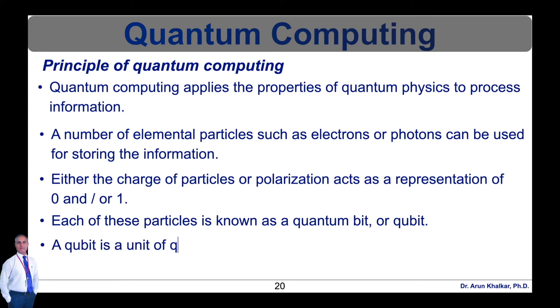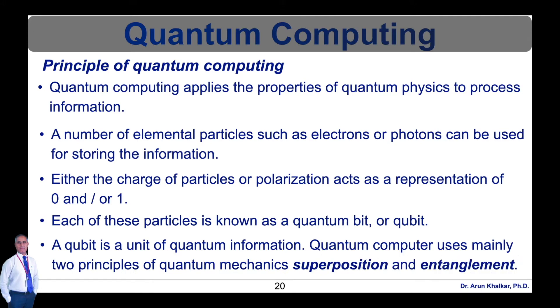A quantum computer uses mainly two principles of quantum mechanics: superposition and entanglement. Let's now go in detail about quantum computing, that is what is qubit and bit, etc., which is out of your syllabus. But as far as the introductory information is concerned for quantum computing, all these parameters are important.